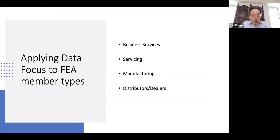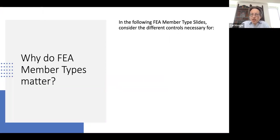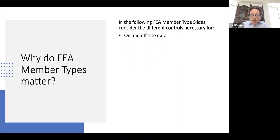Now we move forward to look at the data focus in terms of FEA member types. Looking at the website, there are four member type versions. Before going through them, let's consider why this matters — the controls in each case are going to be slightly different. You can have data that's on and off site; if people have access to that data and they go off site, it can disappear off site as well, and that needs to be controlled.